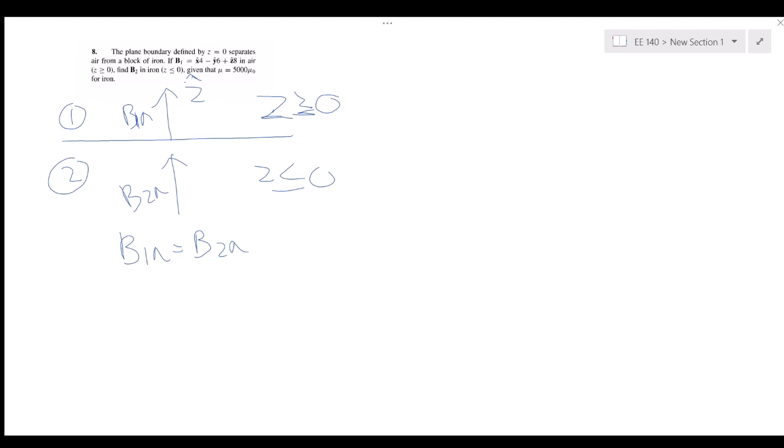So knowing this, b1n is b2n, b2z would just be equal to 8 because they're the same. So now we want to find our tangential component.